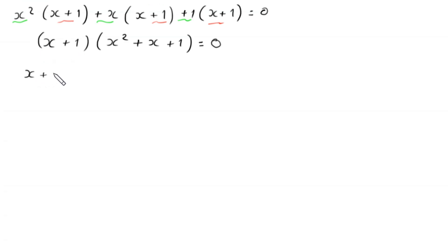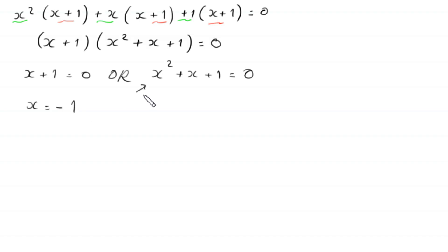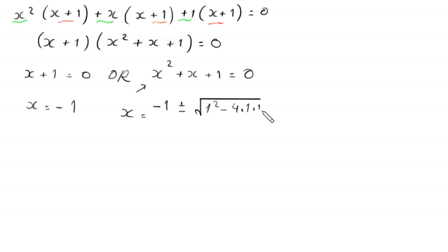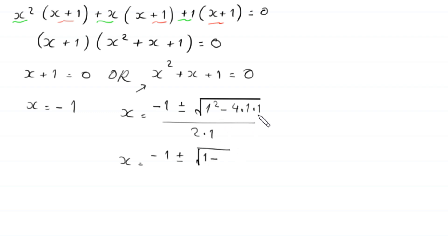Now from here either x plus 1 is equal to 0, or x squared plus x plus 1 is equal to 0. From the first equation we get x is equal to negative 1. And from this quadratic equation x is equal to negative b, where b is 1, plus or minus square root of b squared minus 4ac, where a is 1 and c is 1, divided by 2a. So x is equal to negative 1 plus or minus square root of 1 minus 4, which becomes negative 3, divided by 2.